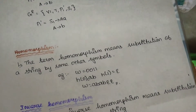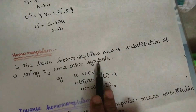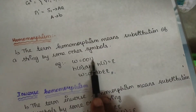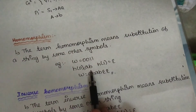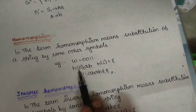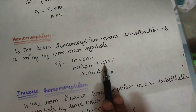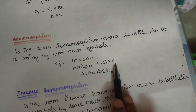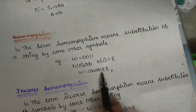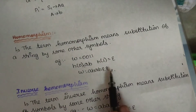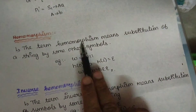The next property is homomorphism. Homomorphism is the substitution of the strings by some other symbols. If there are symbols 0 and 1 — if you substitute a string, that is homomorphism. This symbol is mapped to a string. If you substitute a string using 1, a string is mapped to a string. That is homomorphism.